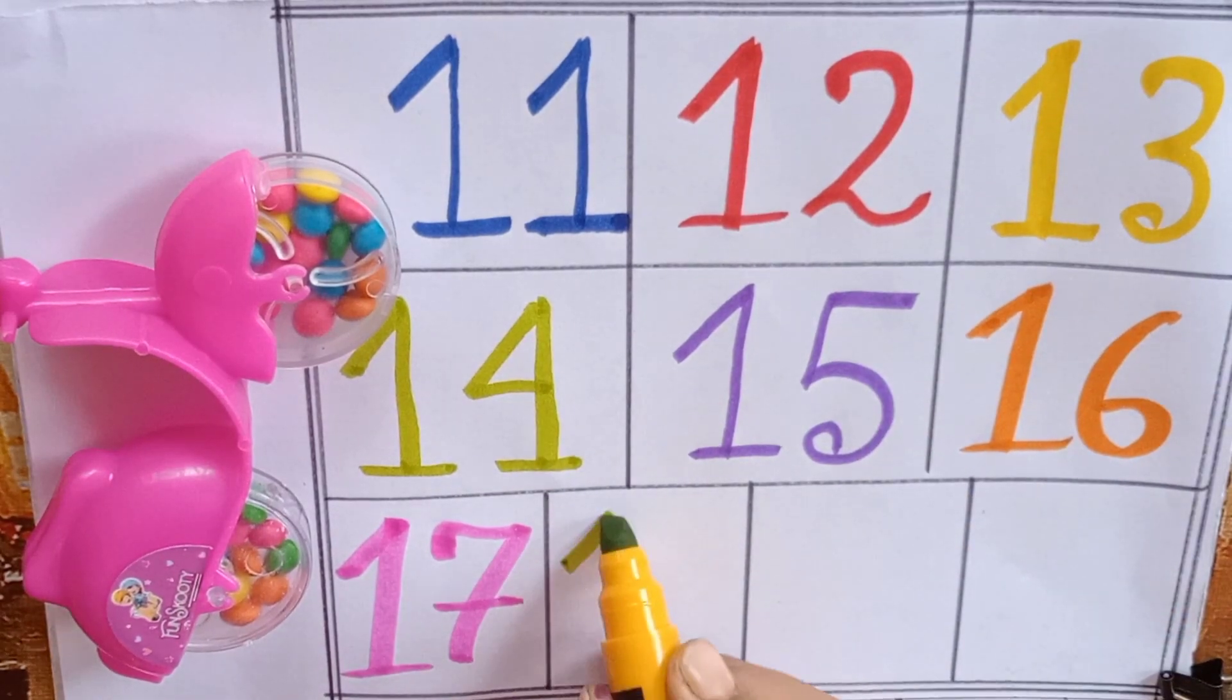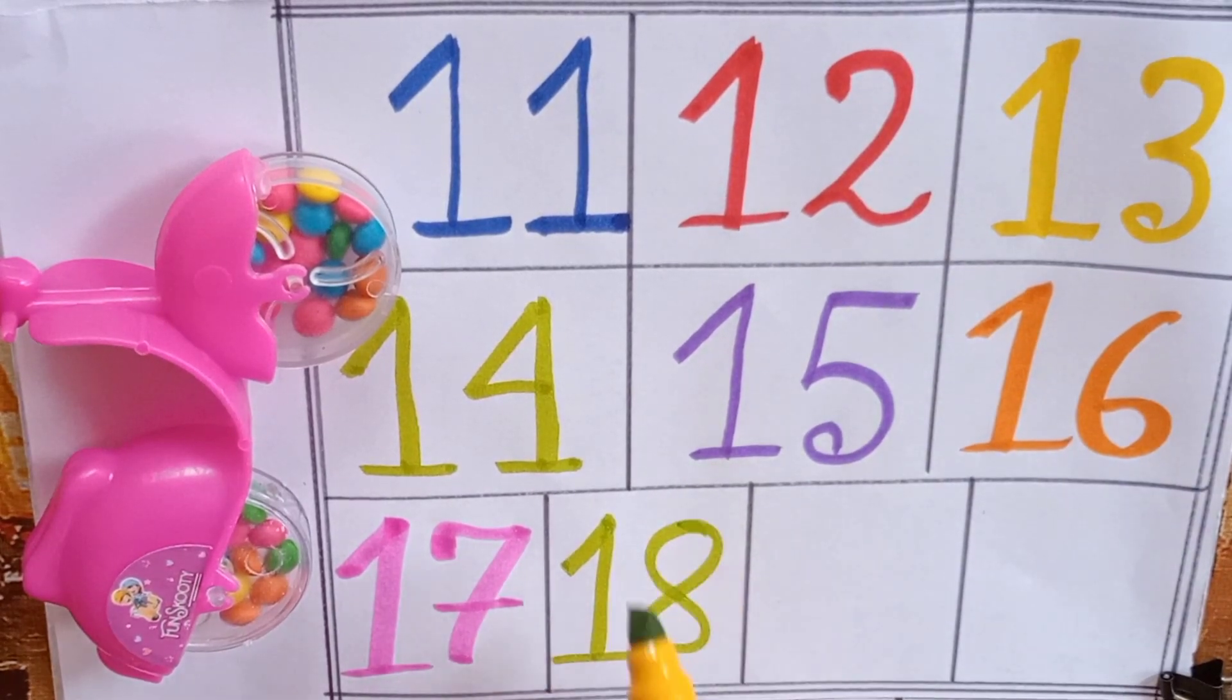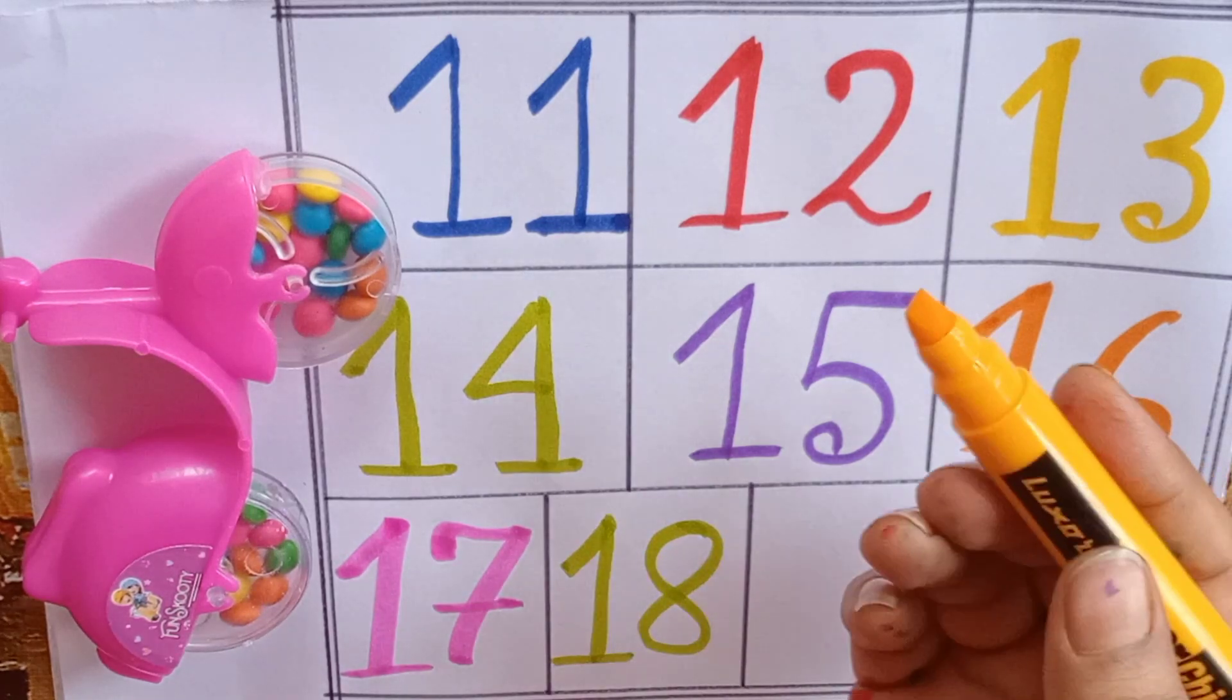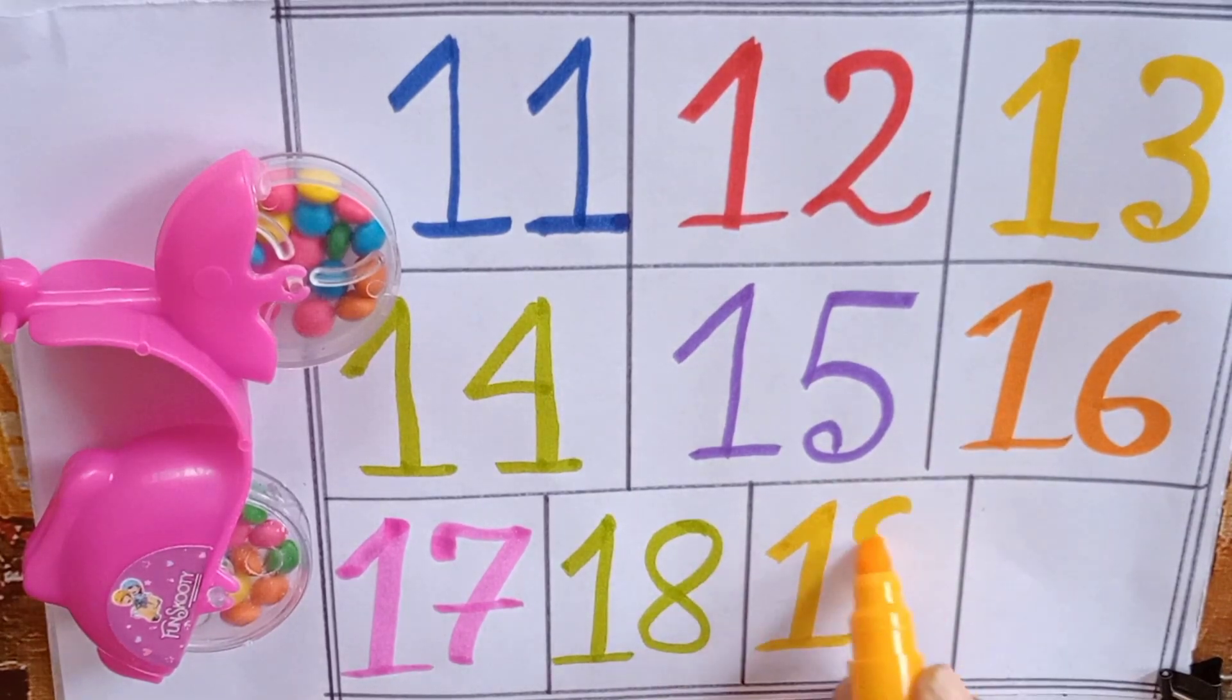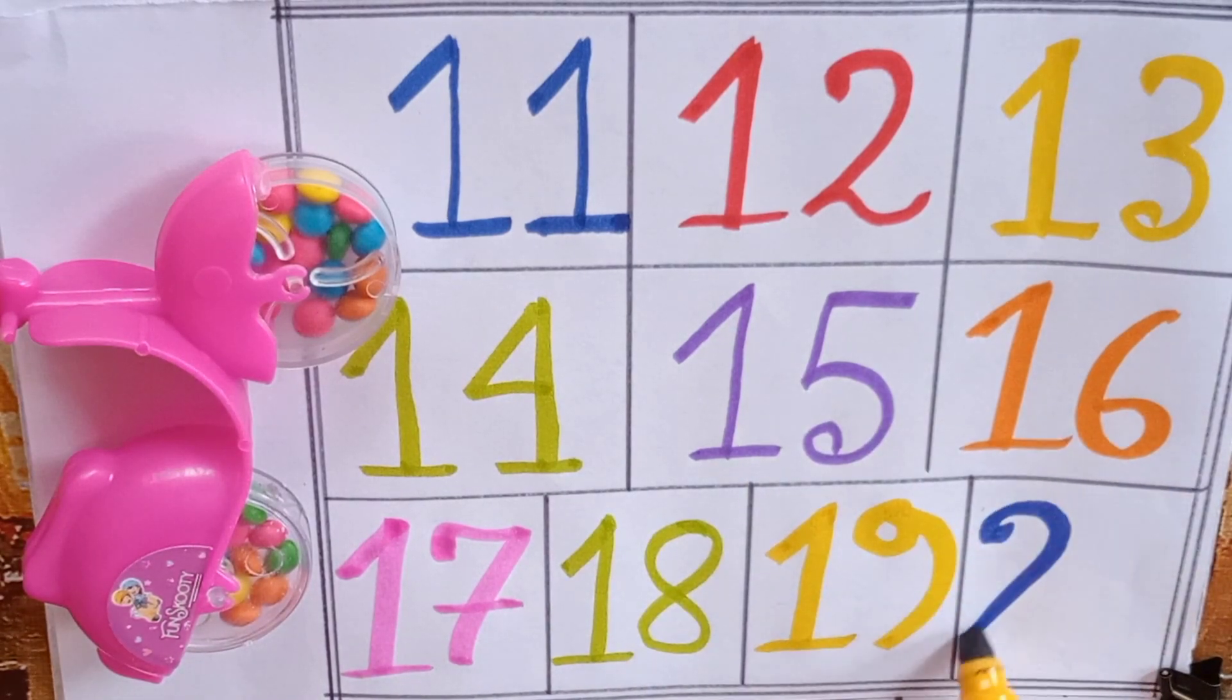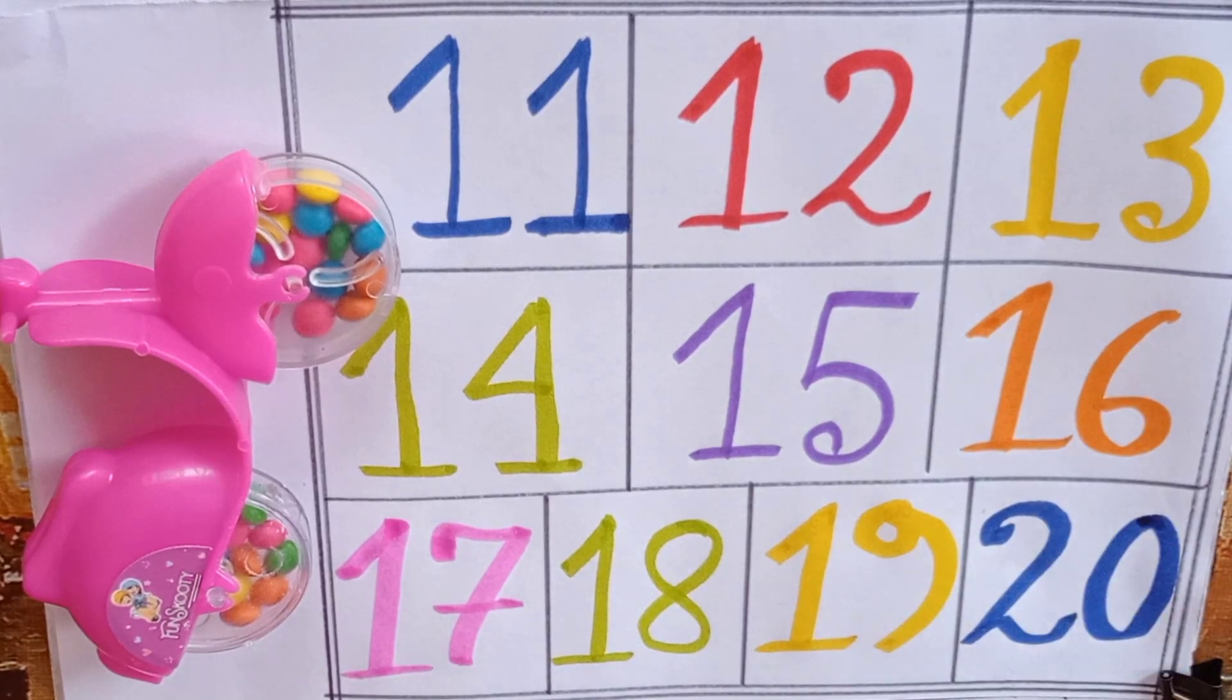One, eight, eighteen. Yellow: one, nine, nineteen. Blue: two, zero, twenty.